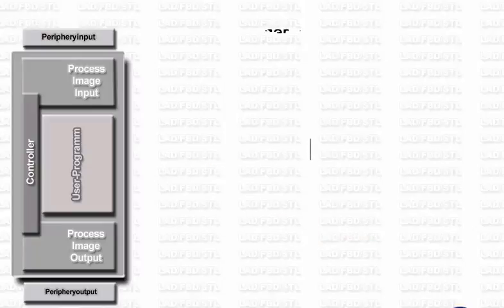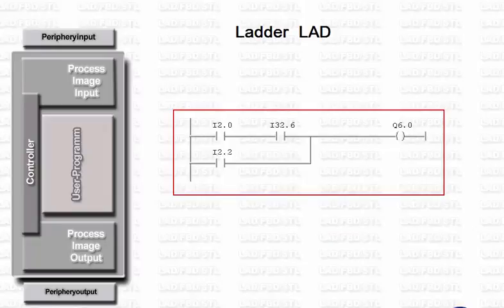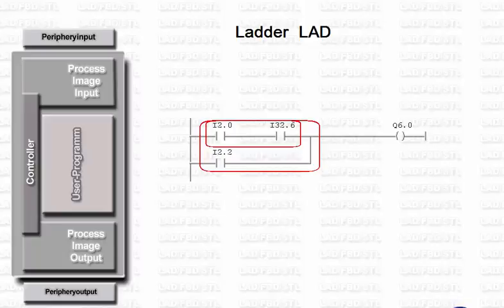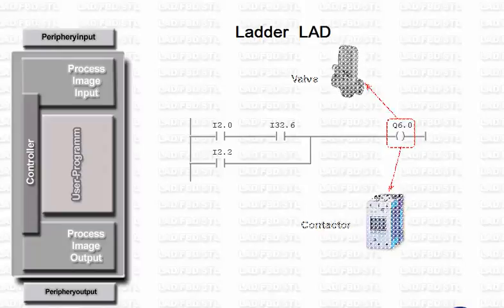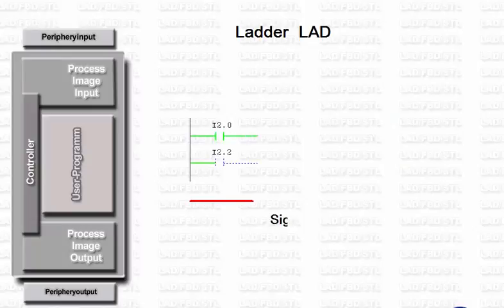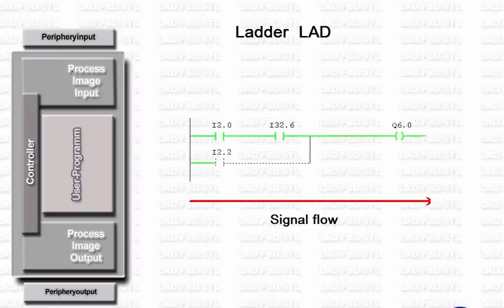In LADDER, the binary combination portion of an automation task is implemented by series and parallel connections of contacts. As in an electrical circuit diagram, each such connection is terminated by a coil which represents the output to an actuator, such as a valve or a contactor. The current, or better signal flow, runs from left to right as seen by the user.